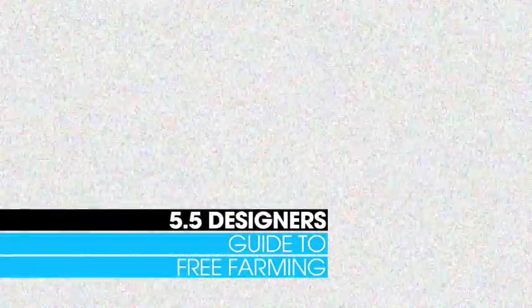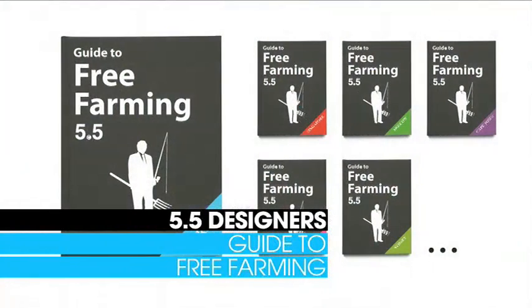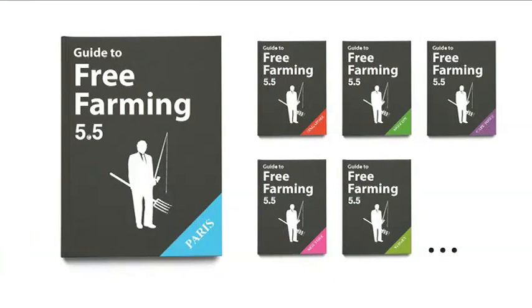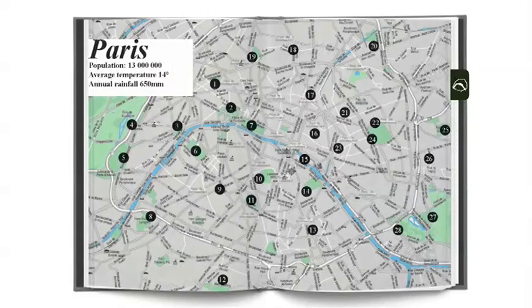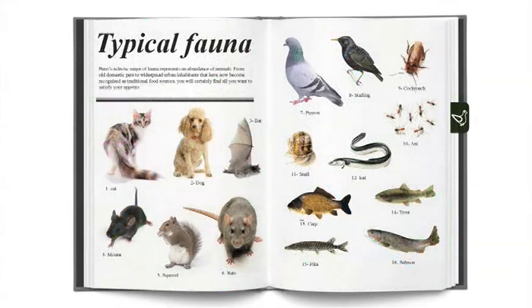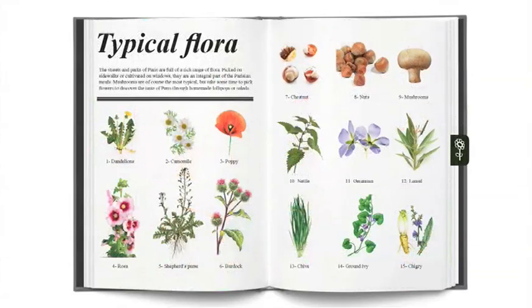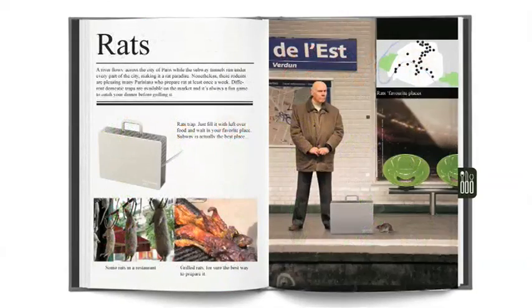5.5 Designers: With more than 80% of the world population living in cities by 2050, 5.5 Designers are concerned that our relationship to nature will stop evolving. The Guide to Free Farming positions the urban landscape itself as an untapped natural resource.